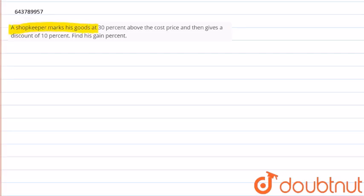Hello everyone, so the question for today is that a shopkeeper marks his goods at 30 percent above the cost price and then gives a discount of 10 percent. We need to find the gain percent.